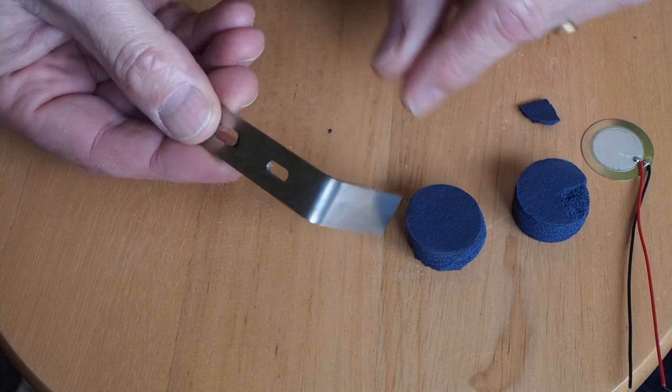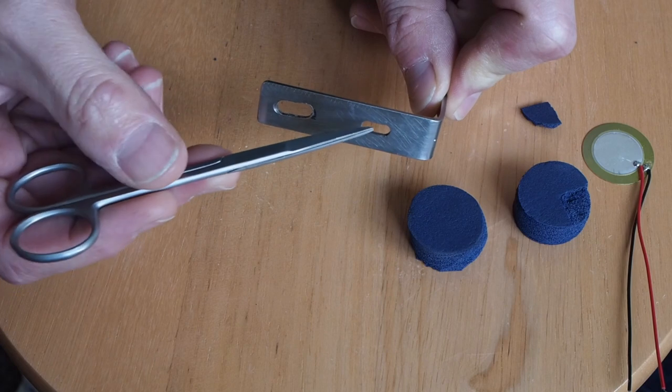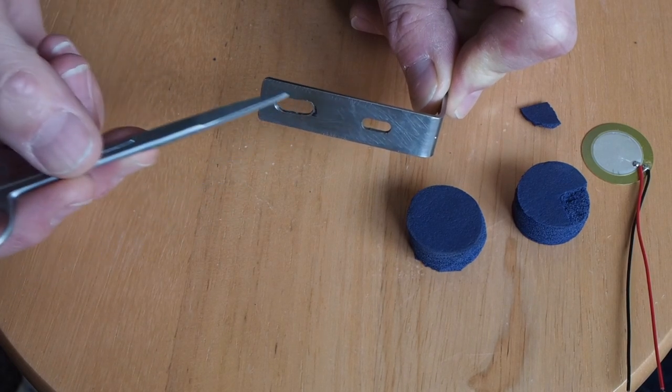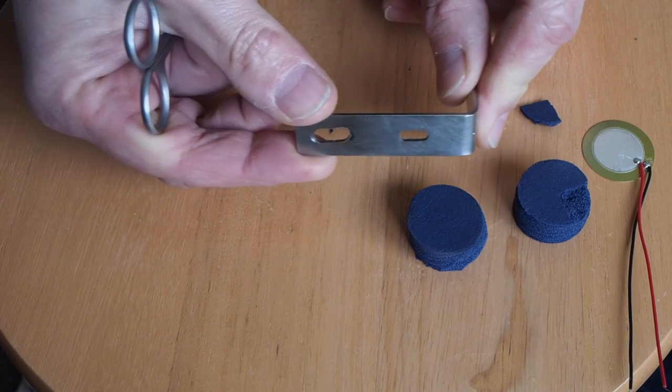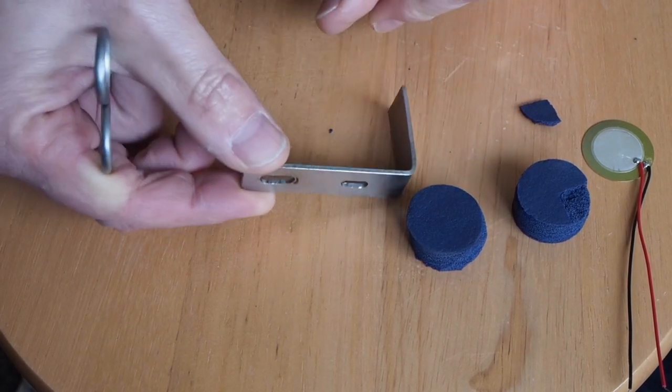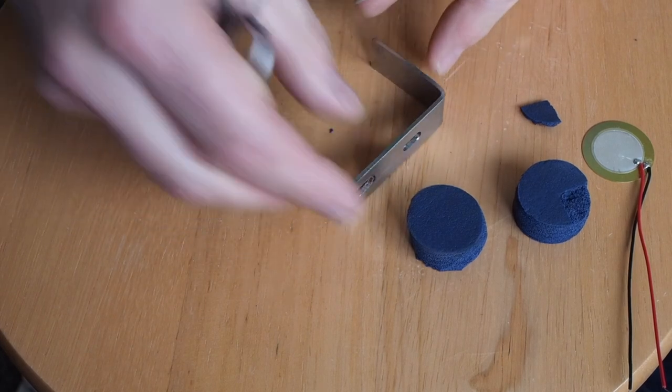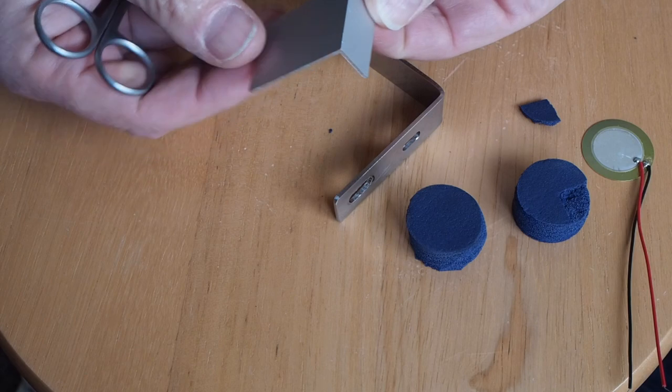The next piece of material is an L bracket. This is to attach the sensor or the trigger to the drum shell. Now this hole is elongated to allow adjustment so that when it's finally fitted we can make sure that the height of the trigger is exactly right.